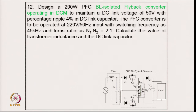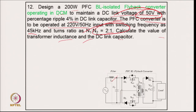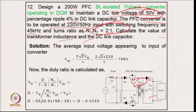Example 12: design a 200 W power factor corrected bridgeless flyback converter operating in discontinuous mode to maintain a DC link voltage of 50 V with 4 percent ripple. The PFC converter operates with a 220 V, 50 Hz supply, switching frequency of 45 kHz, and a transformer turns ratio of 2:1. The bridge is completely eliminated in this topology. The converter input voltage is V_in = (√2 × V_s) / π = 198 V. From the flyback relation with n2/n1 given, the duty cycle is calculated as D = 0.3355.